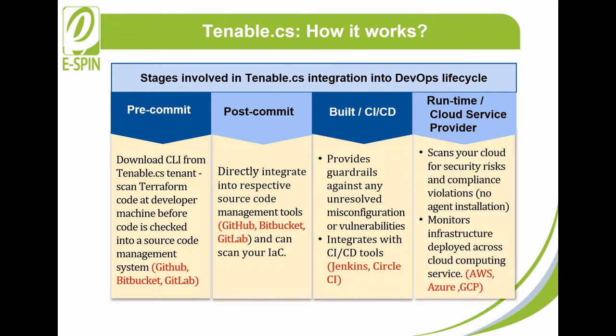At runtime or cloud service provider, Tenable CS scans your cloud for security risks and compliance violations without the need to install any agent into your runtime infrastructure. It also monitors the infrastructure deployed across Amazon Web Service, Microsoft Azure, and Google Cloud Platform to alert any changes in production that can introduce cloud posture drift.